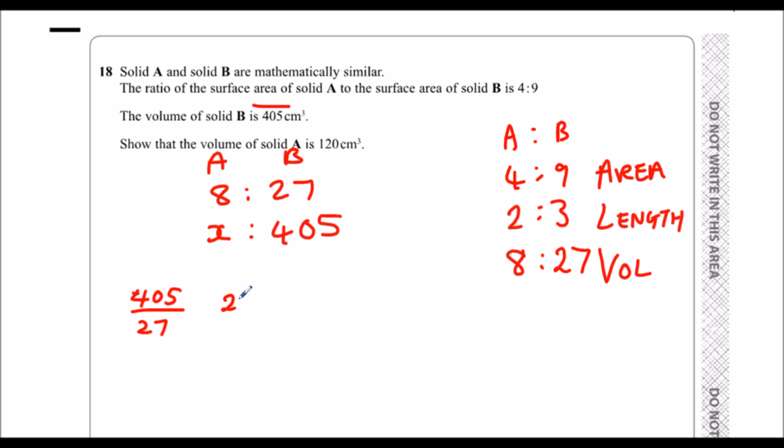I think we're going to have to use long division. So how many 27s going to 4? None, remainder 4. How many 27s going to 40? That's 1, remainder 13. How many 27s going to 135? 5. So 15. So if I times this by 15, that means I've got to times this one by 15. 8 times 15 is 120.